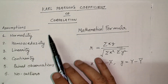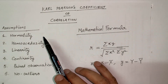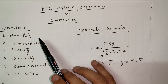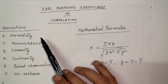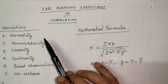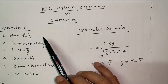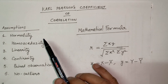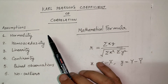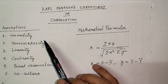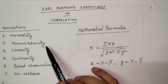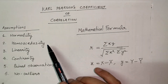Before calculating, there are certain assumptions Karl Pearson has made. First, the data should be normally distributed. If you are at a primary stage of statistics — high school or a beginner — you don't have to worry about it much here; we're just learning the technique. But in advanced research stages, you should check the normality of the data.